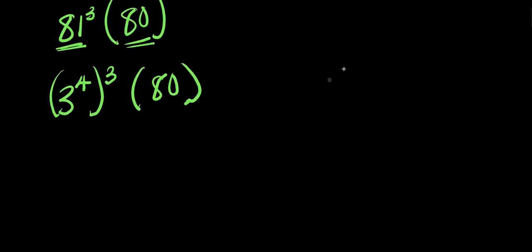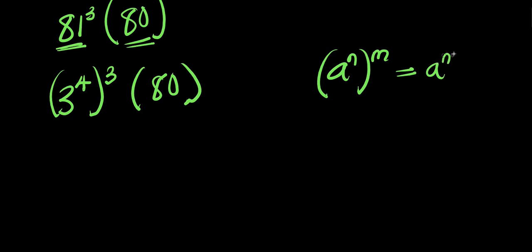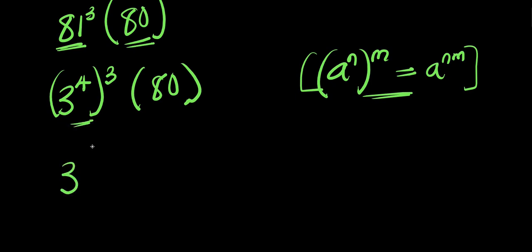Now applying the identity: if you have a to the power n raised to the power m, this equals a to the power n times m. Applying this here, we have 3 to the power 4 times 3, which gives us 3 to the power 12, times 80.